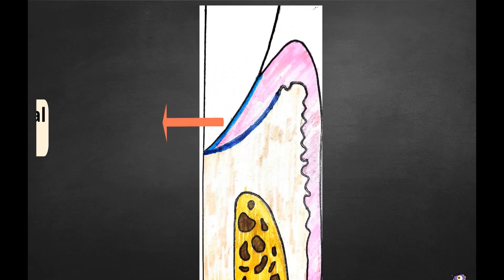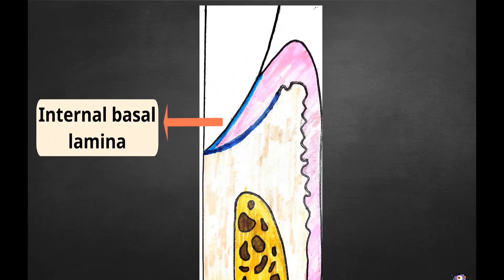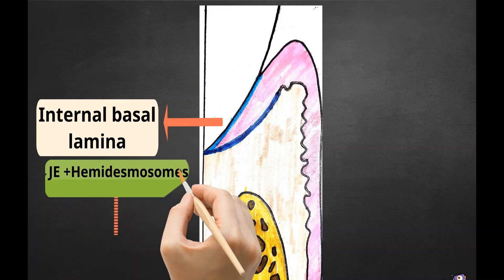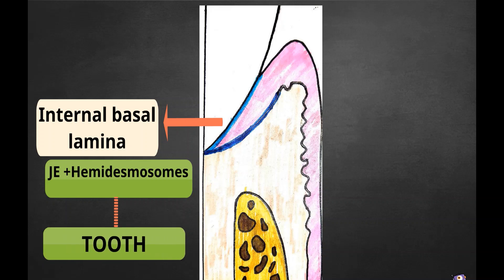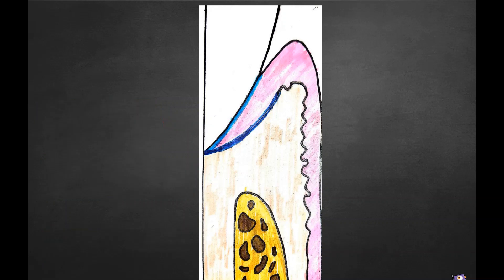The junctional epithelium is attached to the tooth surface by means of an internal basal lamina. Cells from stratum basale of junctional epithelium with the help of hemidesmosomes are attached to the tooth.